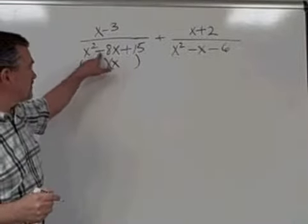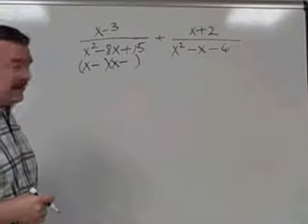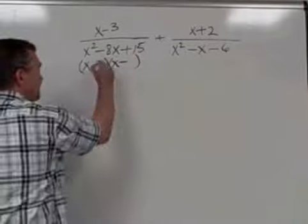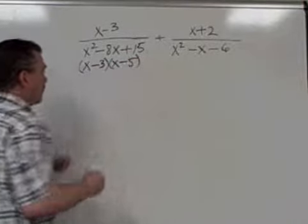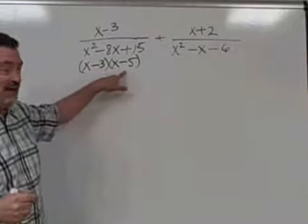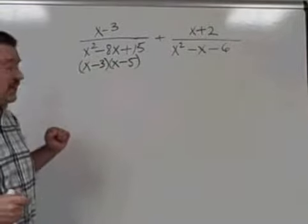A minus and a plus here means we have two minuses in the binomials, and 3 times 5 would give us the 15 we have here, and minus 5x minus 3x more is minus 8x under the O and the I of FOIL.